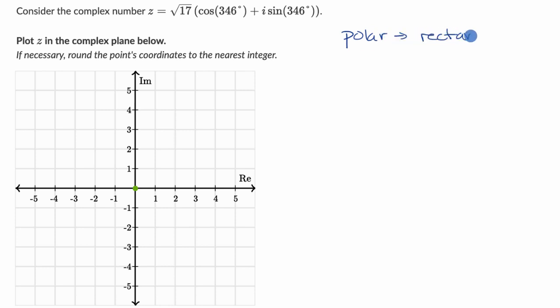And if we're thinking about polar form, we can think about the angle of this complex number, which is clearly 346 degrees. And so 346 degrees is about 14 degrees short of a full circle, so it would get us probably something around there.